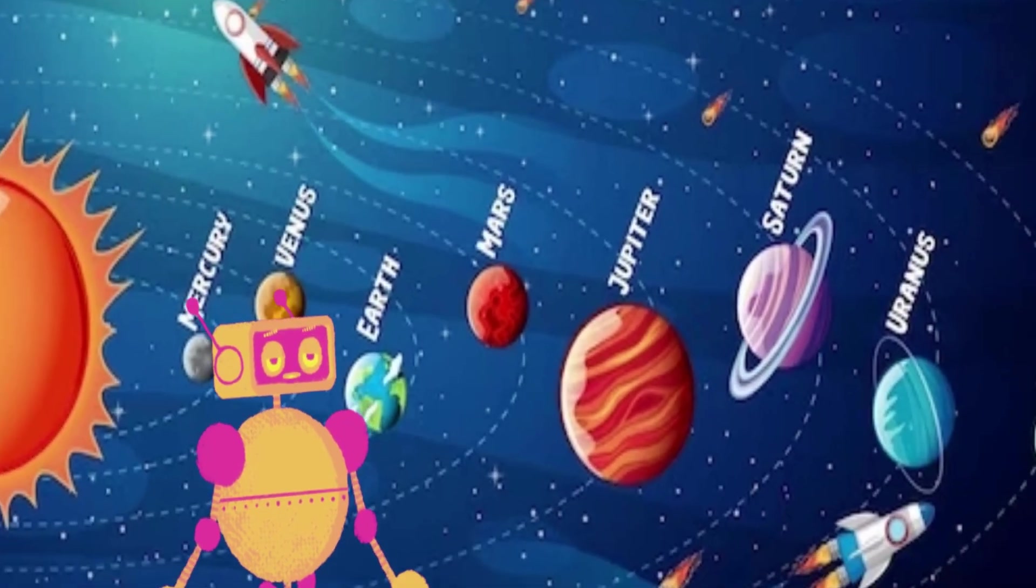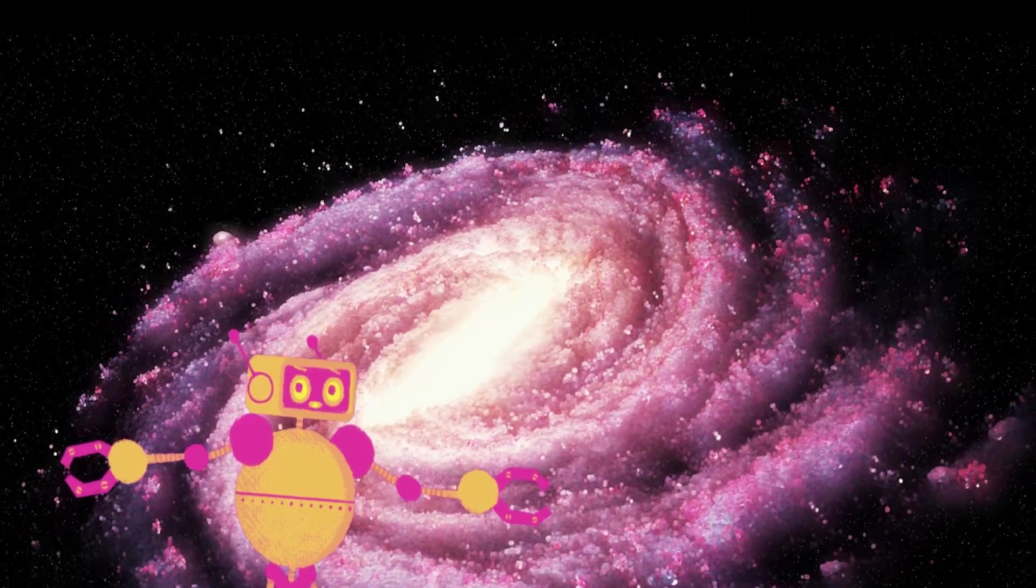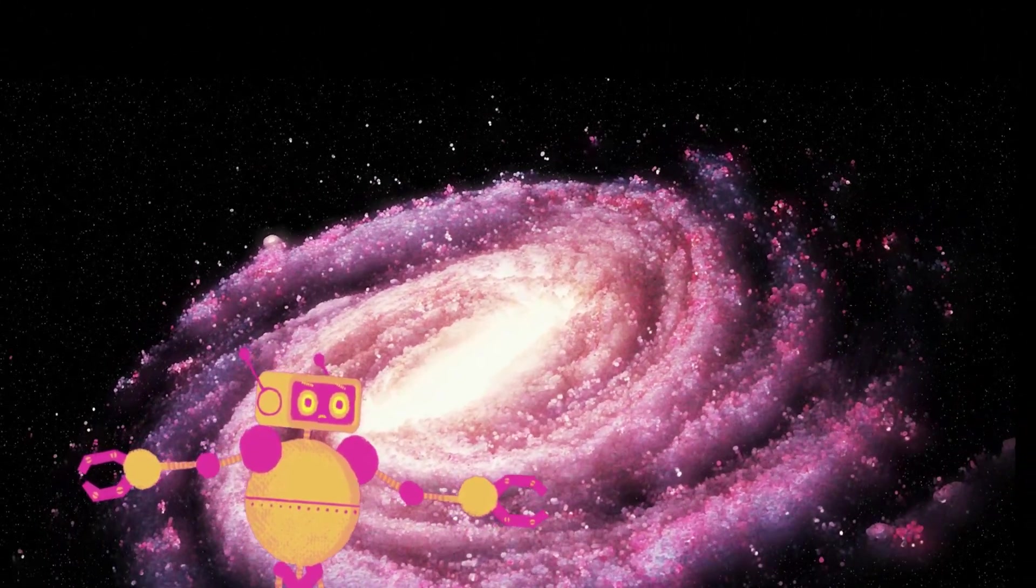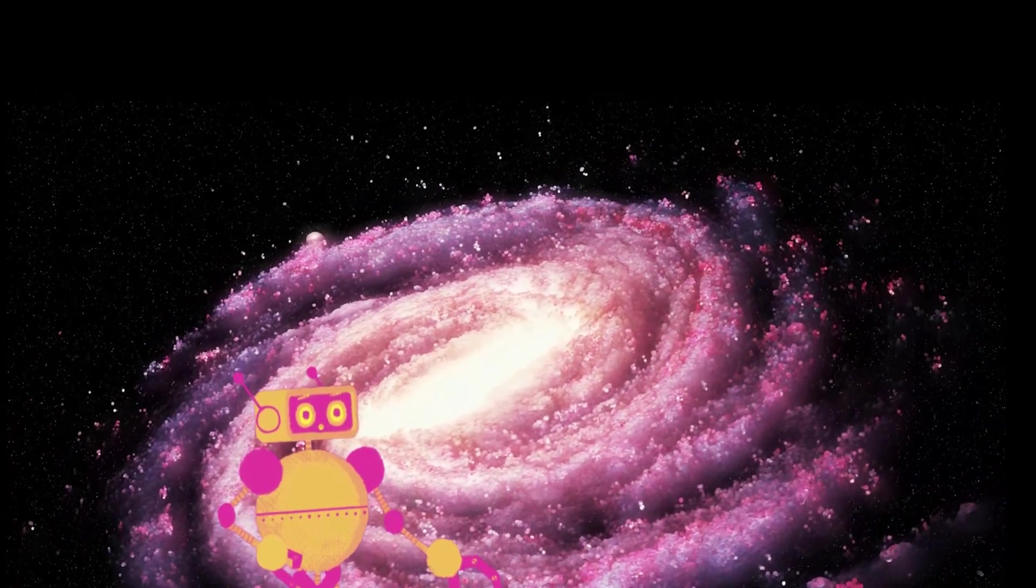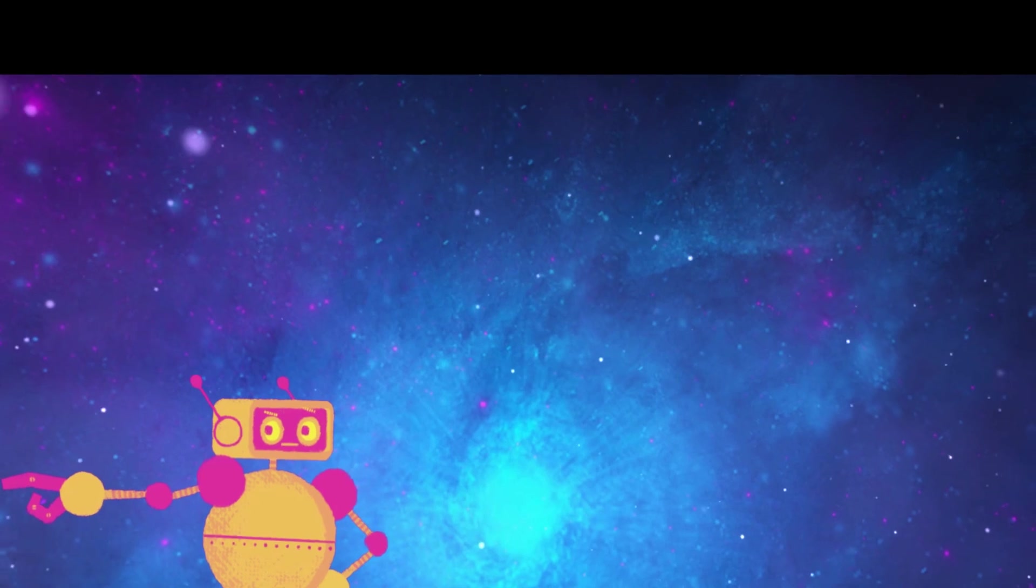The outer planets: Jupiter, Saturn, Uranus, and Neptune. Beyond the asteroid belt, we find the gas giants Jupiter and Saturn, known for their massive size and beautiful rings. Further out, we have the ice giants Uranus and Neptune, with their icy atmospheres and unique characteristics.